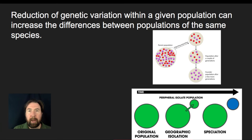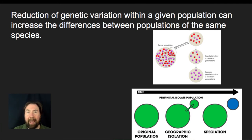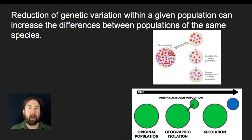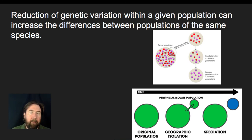When we reduce the genetic variation within a population, it can increase the differences between populations of the same species. When we have a separation event, the individuals that get separated will have a different gene pool — a different mix of genes — than the original population. If there is no gene flow back and forth, this creates a very strong isolation mechanism. Those two populations will start evolving toward their unique environments and may lead to very rapid speciation because of the lack of gene flow and the randomness of how those gene pools got separated, since their allele frequencies were already unique.